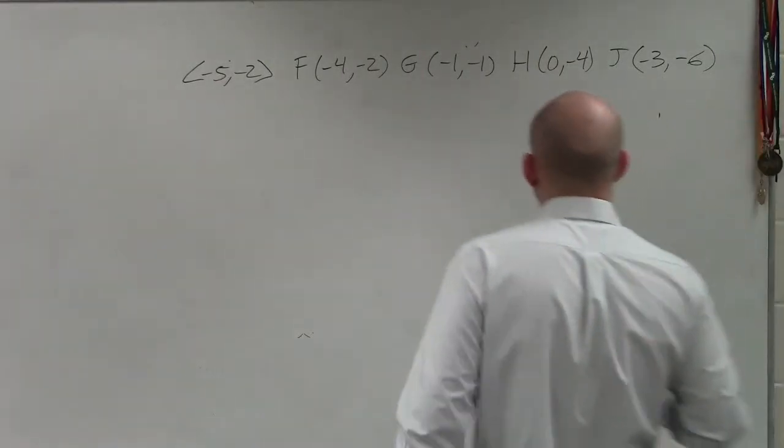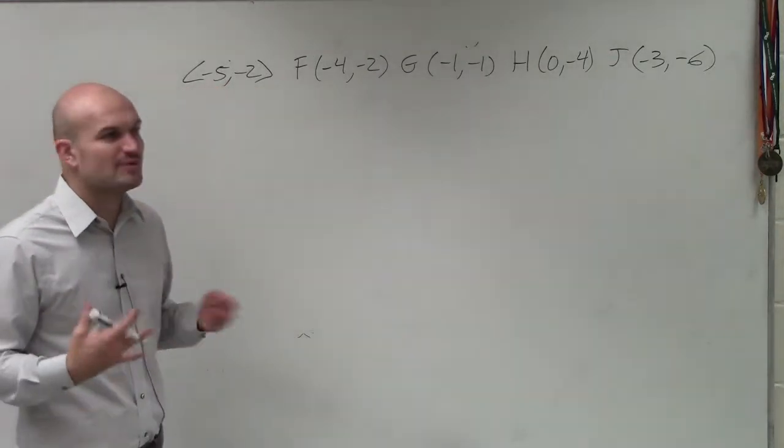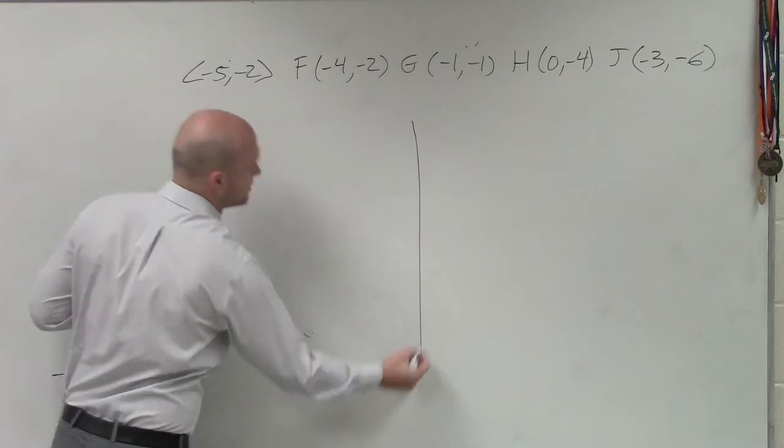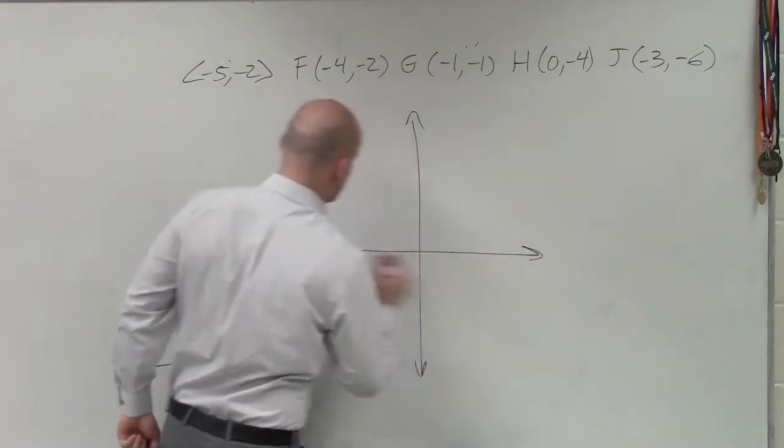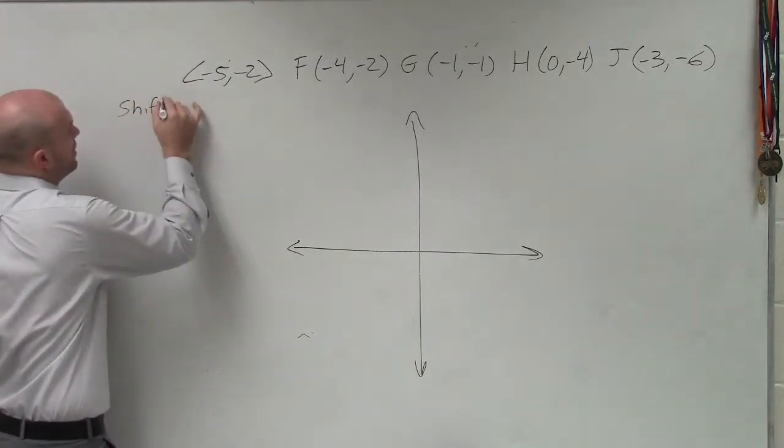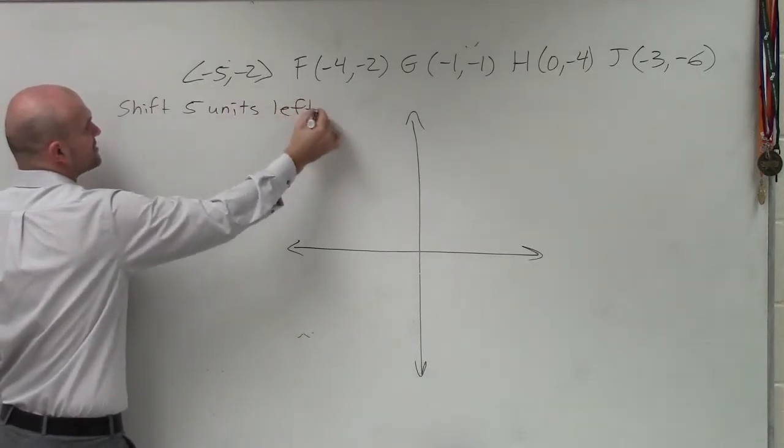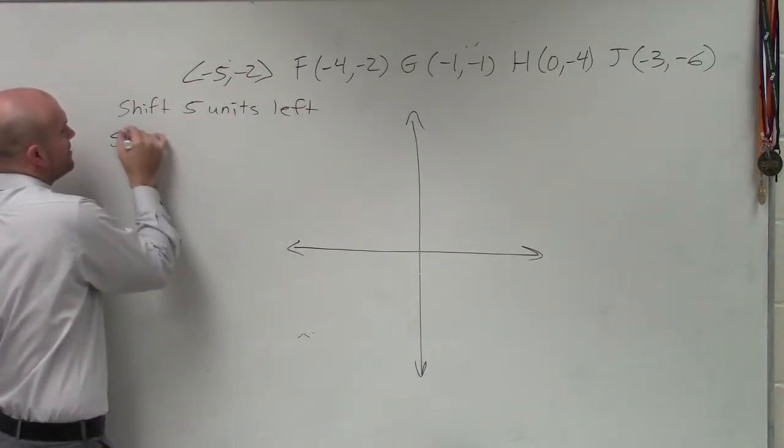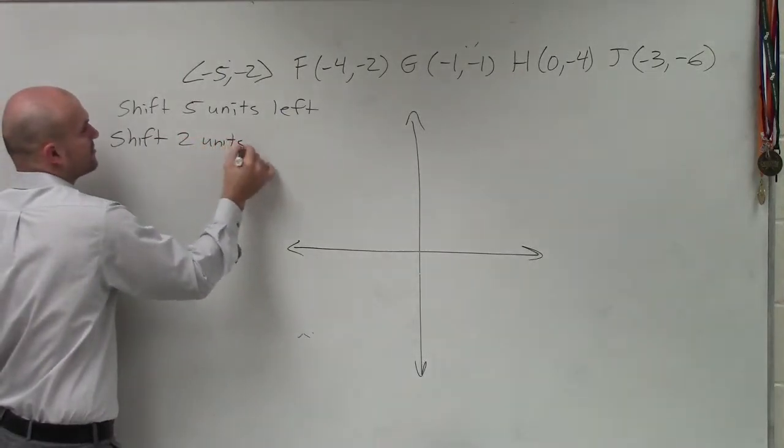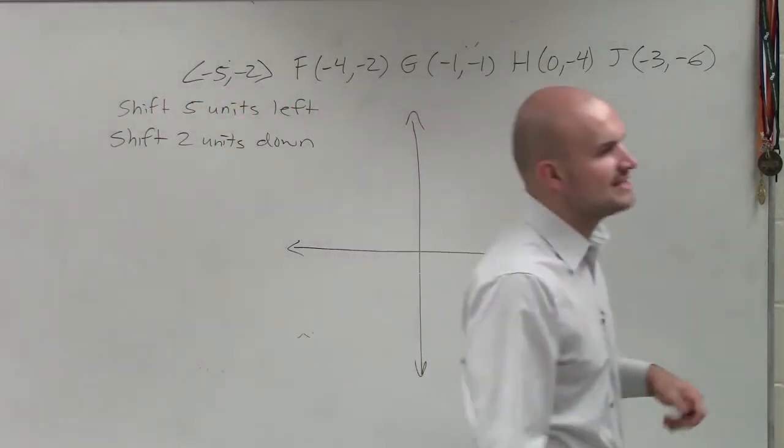On a problem like this, rather than having to rewrite all of them, what I would do, ladies and gentlemen, is let's plot these points and then determine what our transformation vector is telling us to do. Our transformation vector is telling us to shift our image five units to the left, since it's negative, and then shift two units down. So since the negative 2 is negative, that's going to tell us to shift it down.